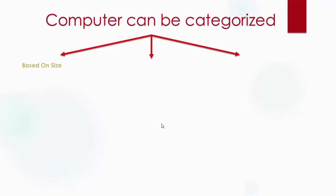Computers can be categorized into three main categories: Number one, based on size. Number two, based on mechanism or technology used. Number three, based on purpose.